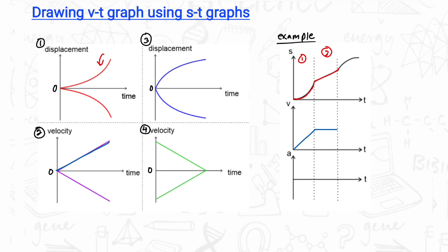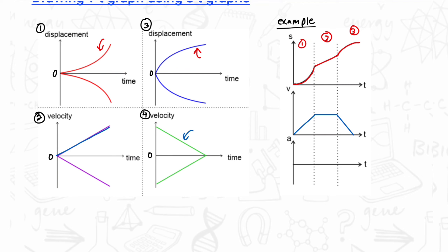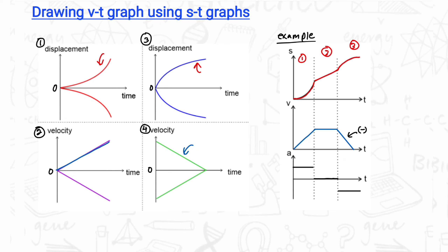Finally, we have a curve in which the gradient decreases, and the corresponding velocity-time is decreasing. To draw the acceleration-time graph, we take the gradient of the velocity-time graph: in the first section there is a gradient, so we draw a straight line; in the second section the gradient is 0 as the line is horizontal; and in the third section there is a negative gradient. This is how you draw VT and AT graphs using the KCKP method.